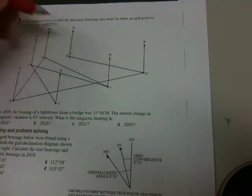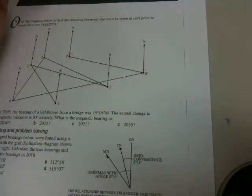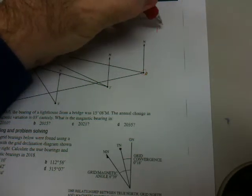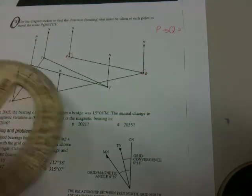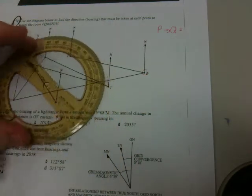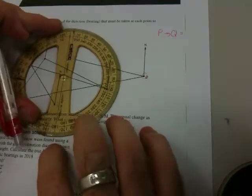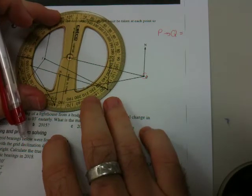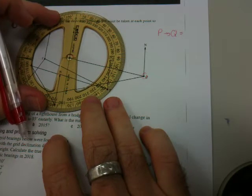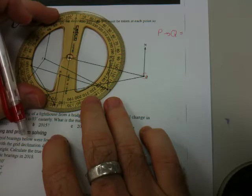So the first point here is P and we're going through over here to Q. So P to Q equals, grab our protractor and have a look. Line up 0 degrees with north and make sure the middle of the protractor is right at our originating point which is P.